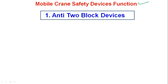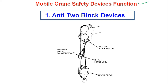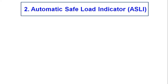The first safety device is the anti-two blocking device. This is a very important device in mobile crane — it is an electrically sensing device installed on the crane to prevent the headache ball from hitting the sheaves. The anti-two blocking device consists of a weighted ring around the hoist line, suspended on a chain from a limit switch that is attached to the boom tip.